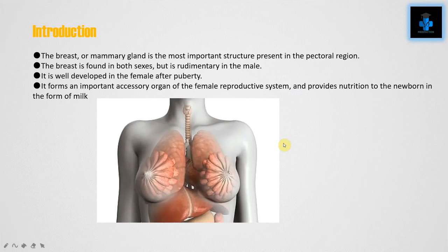The breast or mammary gland is the most important structure present in the pectoral region. The breast is found in both sexes but it is rudimentary in the male. It is well developed in the female after puberty. It forms an important accessory organ of the female reproductive system and provides nutrition to the newborn in the form of milk.